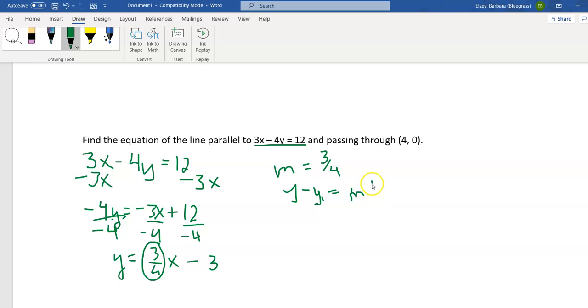So we'll have y minus 0, m is 3 fourths, x minus 4. Now we get lucky on the left-hand side, we just get y. But let's distribute the right-hand side. We'll get 3 fourths x, and then 3 times 4 is 12, 4 times 1 is 4, that'll be 12 over 4. And of course, we can reduce 12 fourths to 3. And there's the equation of our line that's parallel to this one.